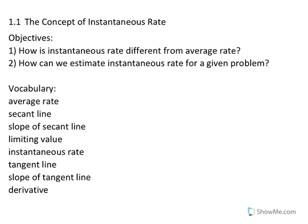Section 1.1: The concept of instantaneous rate. Objectives: How is instantaneous rate different from average rate? How can we estimate instantaneous rate for a given problem? Vocabulary: average rate, secant line, slope of secant line, limiting value, instantaneous rate, tangent line, slope of tangent line, and derivative.